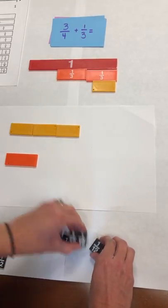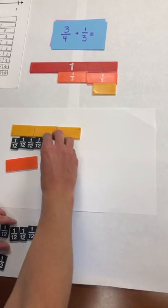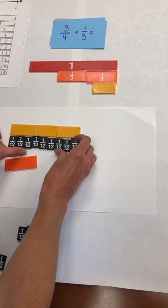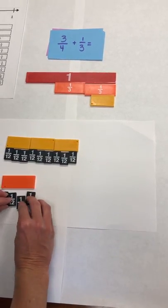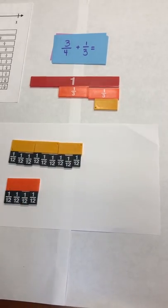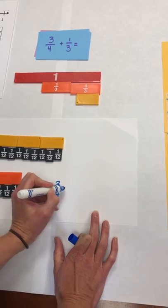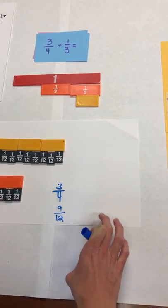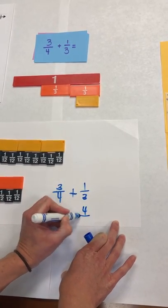I can use my twelfth pieces. You can show them with the unit fraction side up or down. If I add these together, I show that three-fourths is equivalent to nine-twelfths and then I show that one-third is equivalent to four-twelfths.